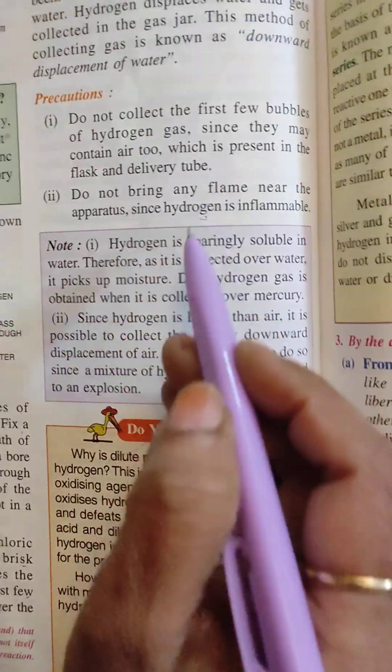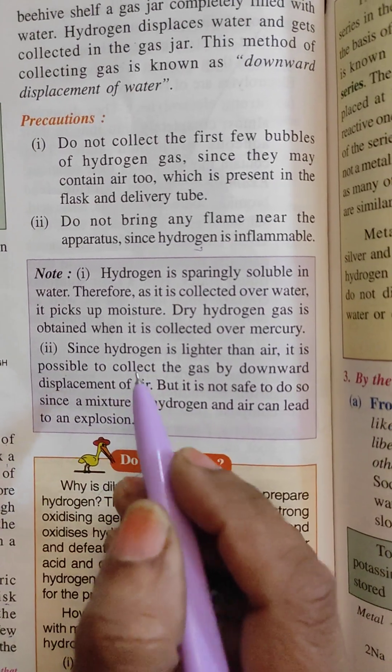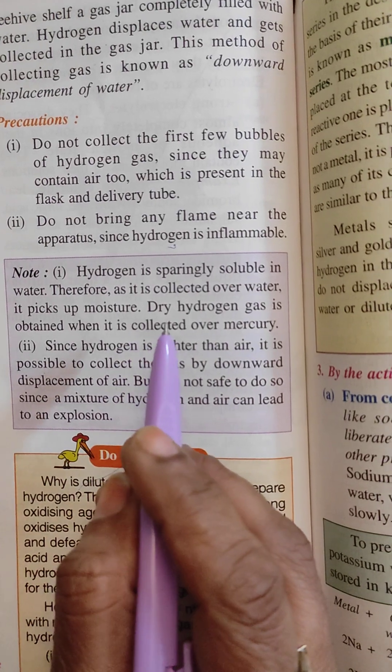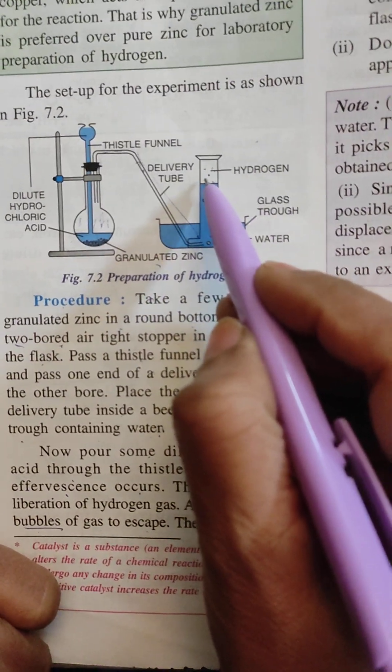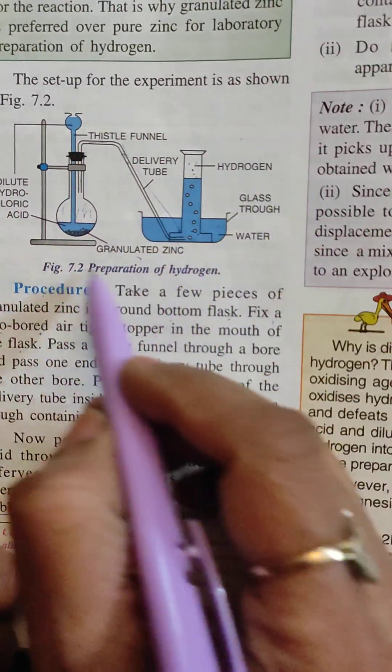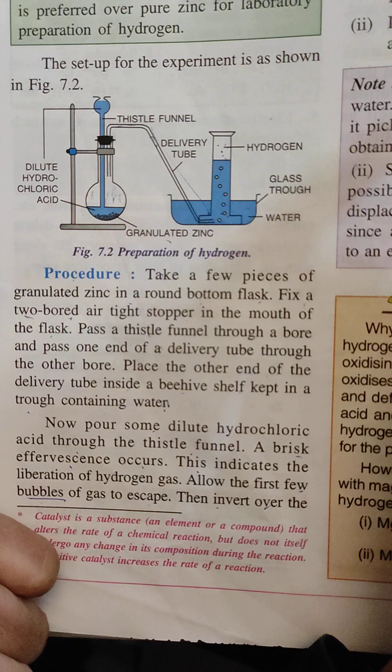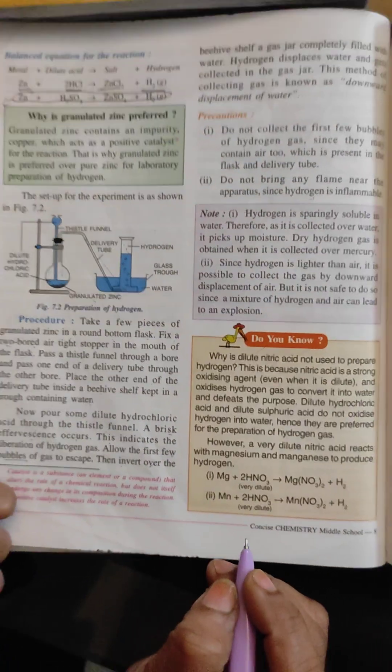And read the second point. Don't bring any flame near the apparatus since hydrogen is inflammable. You don't have to bring, second precaution is you don't have to bring any flame near it, near this apparatus. This everything is known as apparatus because the hydrogen is highly inflammable. Okay beta? Yes ma'am. Thank you ma'am.